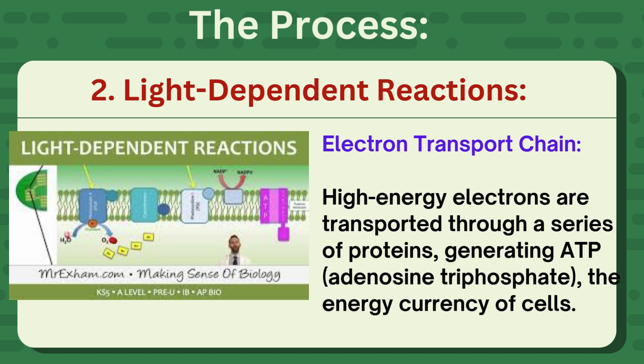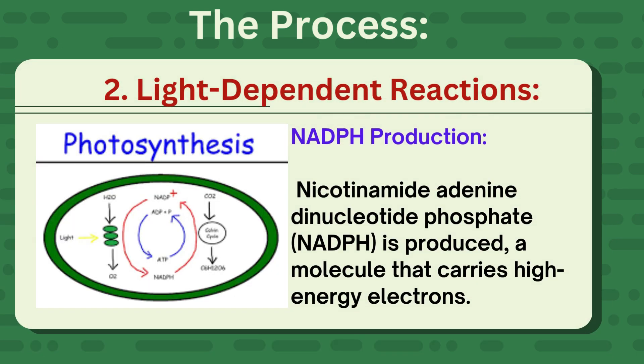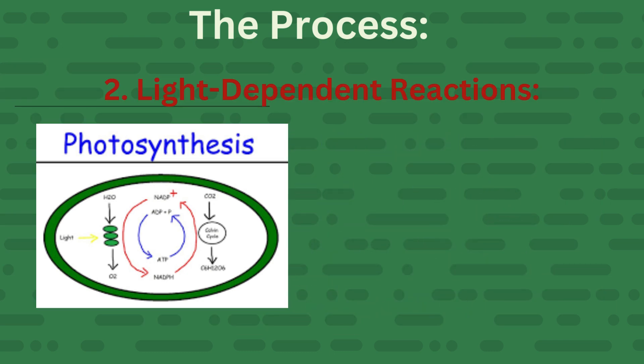Electron transport chain: high-energy electrons are transported through a series of proteins, generating ATP (adenosine triphosphate), the energy currency of cells. NADPH production: nicotinamide adenine dinucleotide phosphate, NADPH, is produced — a molecule that carries high-energy electrons.